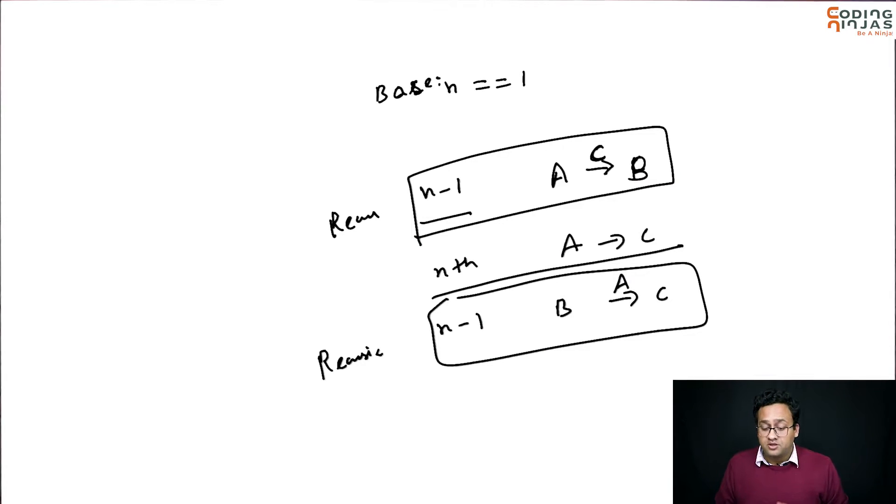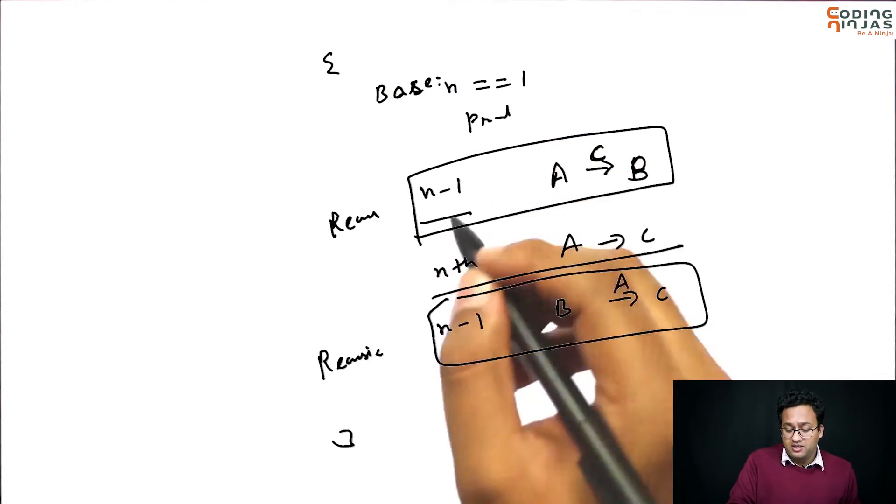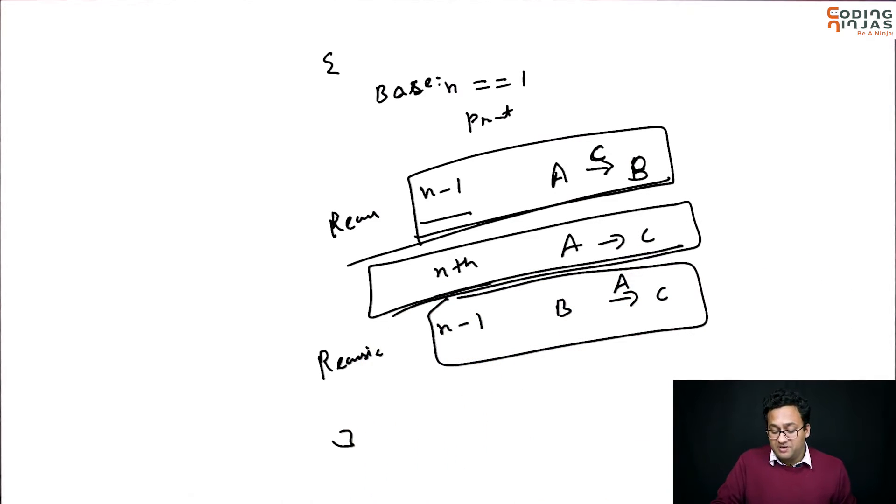So, your function will look extremely simple. It will have basically a base case in which you will be printing something. It will have this recursive call. Then you will have some print statement here. Then you will have another recursive call. And that's it. Will be done.